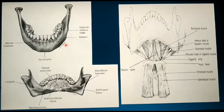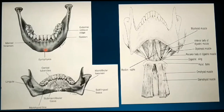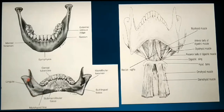Even though the mandible is basically V-shaped, it has been modified into four functional processes: namely the angle, the coronoid process, the condylar process, and the alveolar process.